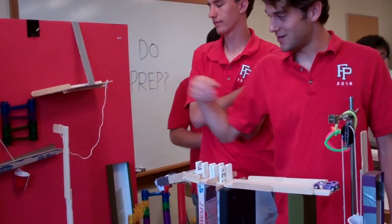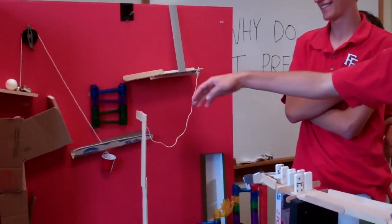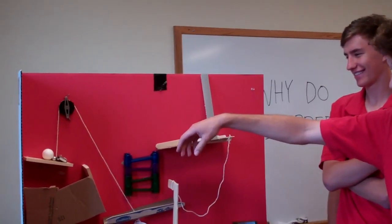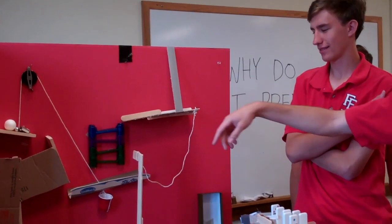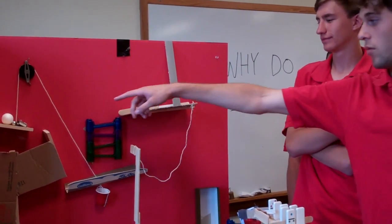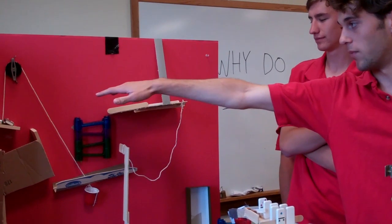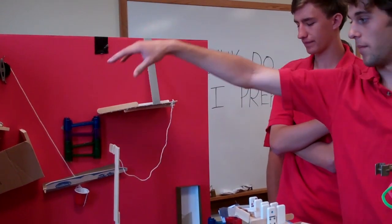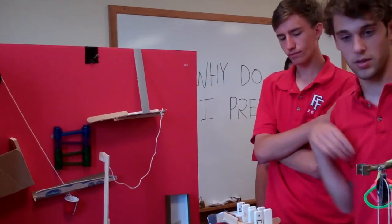Then rolls down this incline plane, goes through this contraption, I guess you could call it, falls in like a toilet paper roll, a hole which you can't see, falls through the hole which knocks into that cup, which activates the pulley, releasing that domino that's blocking a couple balls, when that domino gets pulled up, they fall down, and then will hit the mousetrap.